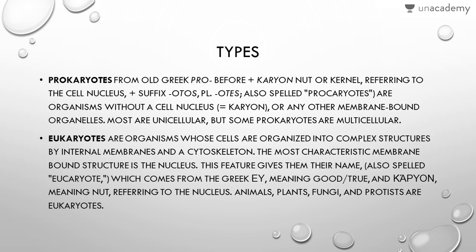There are two main types of cells: prokaryotes and eukaryotes. 'Prokaryote' comes from the Greek 'pro' meaning before, and 'karyon' meaning nut or nucleus. Prokaryotes are organisms without a cell nucleus or any other membrane-bound organelle. Most are unicellular, though some prokaryotes are multicellular. Essentially, they do not have a well-defined nucleus — only a primitive type — and they lack membrane-bound organelles.